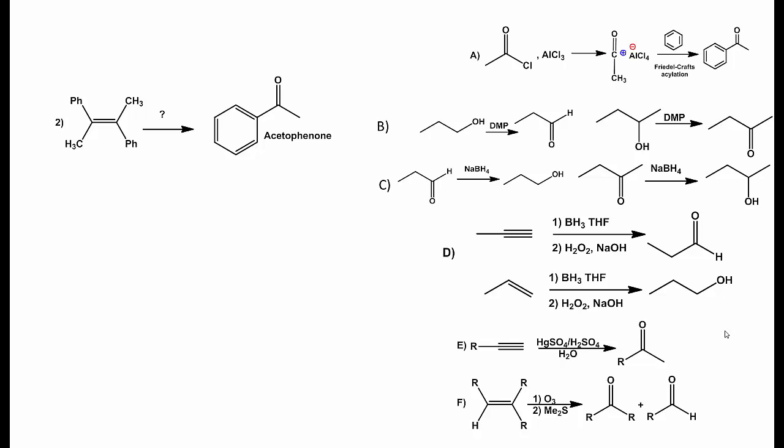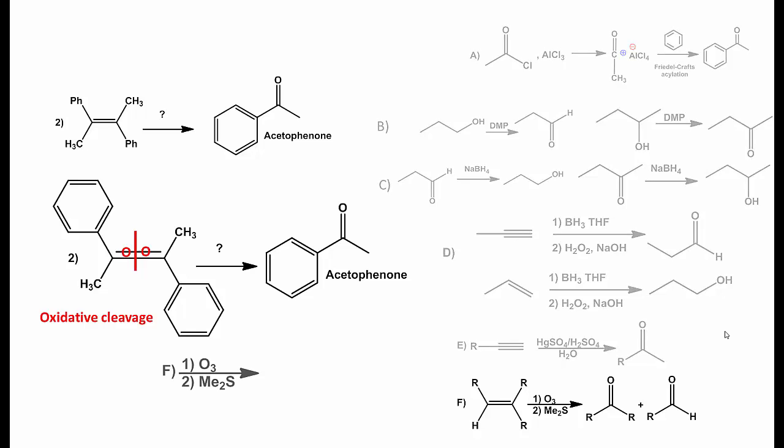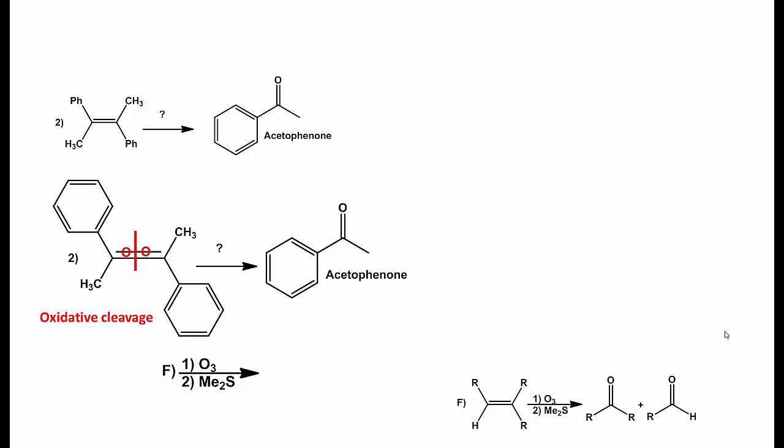The second reagent has an alkene starting material. Each end of the alkene contains a phenyl and a methyl substituent. It can be seen from the symmetry that the oxidative cleavage reaction is needed to cleave the double bond and convert it to a ketone, giving 2 moles of acetophenone. Therefore, an ozonolysis reaction will work, and the correct reagents are F, ozone followed by dimethyl sulfide.